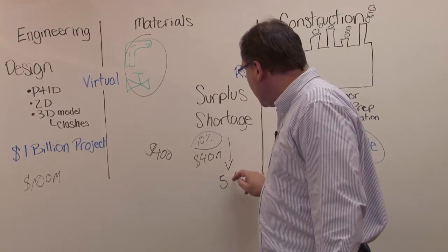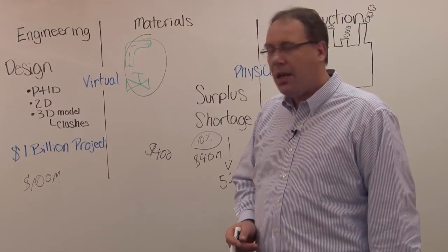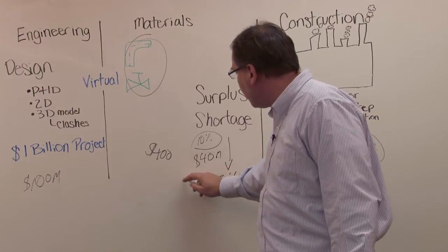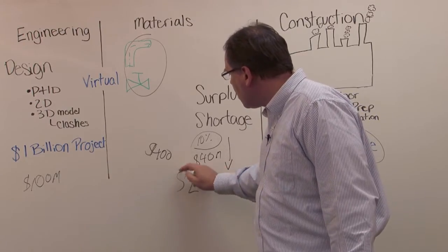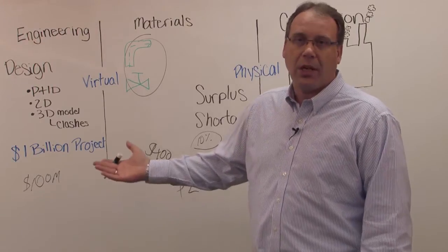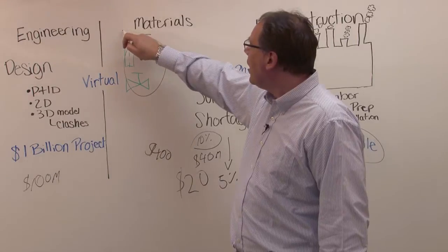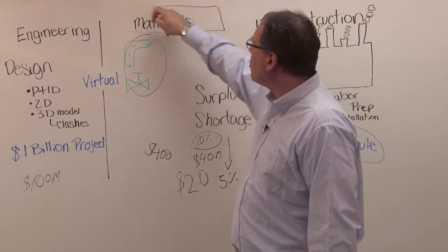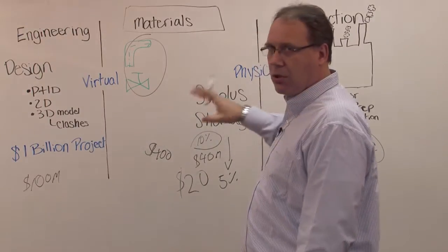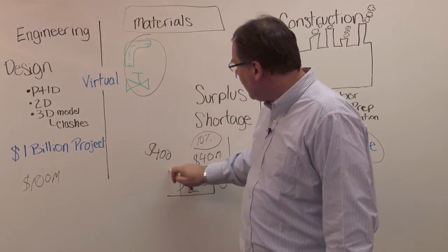What this means when you're able to reduce the surplus to 5%, you would have savings of 20 million for materials management in this project. And this is the reason why a lot of companies are introducing materials management solutions that are comparing the different quantities in different systems so they can achieve these savings in projects.